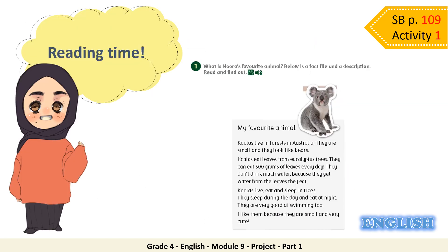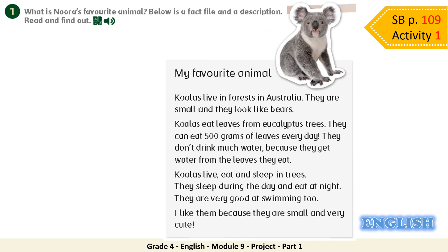Now it's time to read the paragraph in the same activity — Activity 1, student book page 109. Module 9, Project 1: what is Nora's favourite animal? Below is a fact file and a description — read and find out. My favourite animal: Koalas live in forests in Australia. They are small and they look like bears. Koalas eat leaves from eucalyptus trees; they can eat 500 grams of leaves every day. They don't drink much water because they get water from the leaves they eat. Koalas live, eat, and sleep in trees; they sleep during the day and eat at night. They are very good at swimming too. I like them because they are small and very cute.